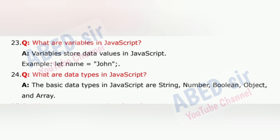Question 24: What are data types in JavaScript? The basic data types in JavaScript are string, number, boolean, object and array.